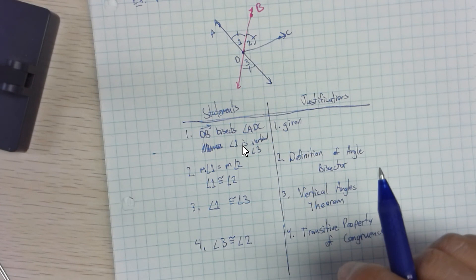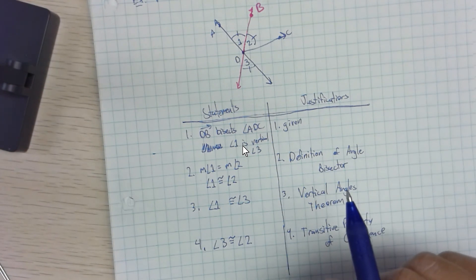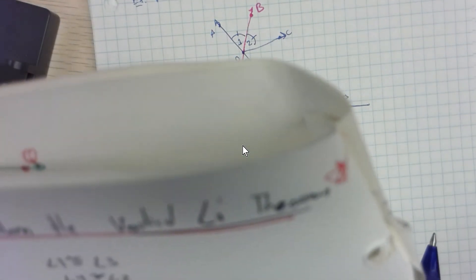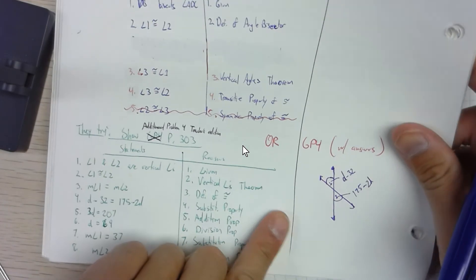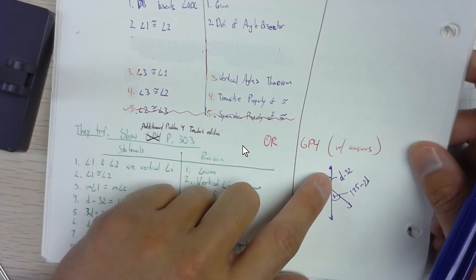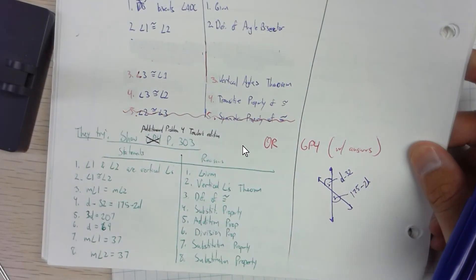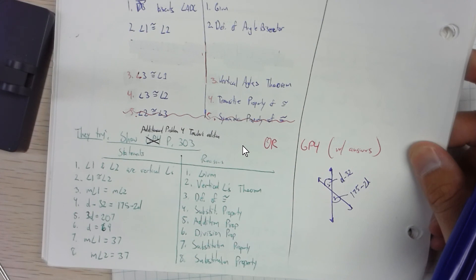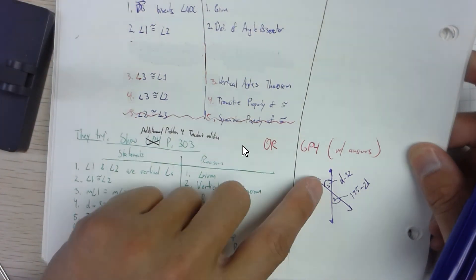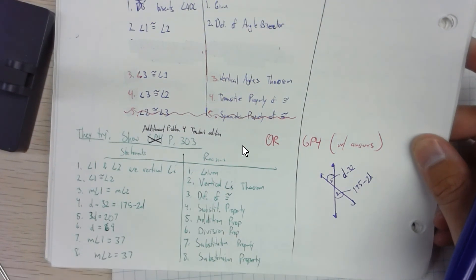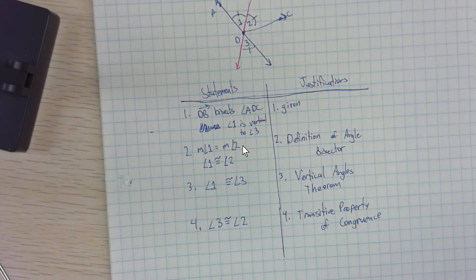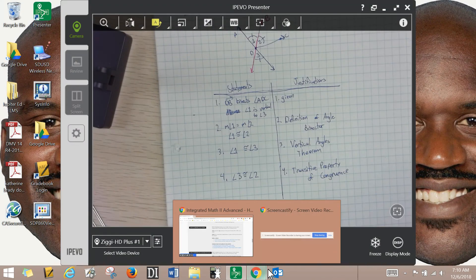That's about it for section 5-4. There's one more problem where you're given two vertical angles with expressions, and you set them equal to find x and then calculate the angle measures — look for problems like that in the book and practice them. The next videos will cover sections 5-5 and 5-6. Take care, guys.